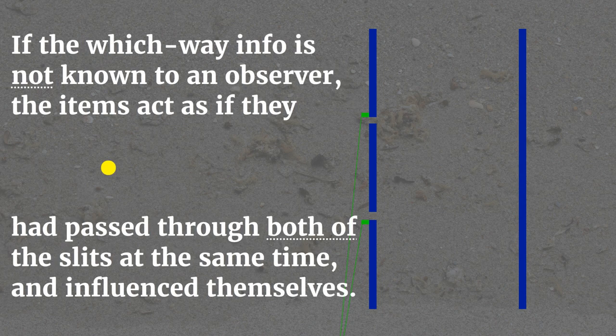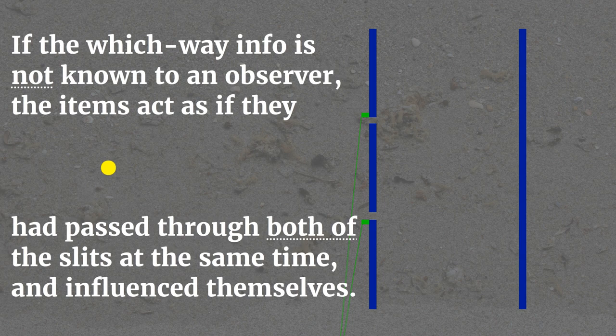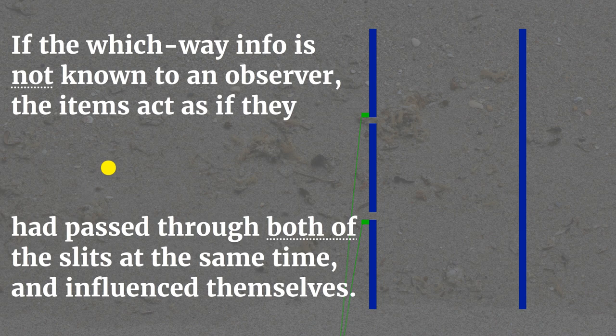If the which-way info is not known to an observer, the items act as if they had passed through both of the slits at the same time and influenced themselves.